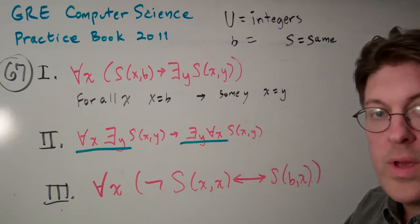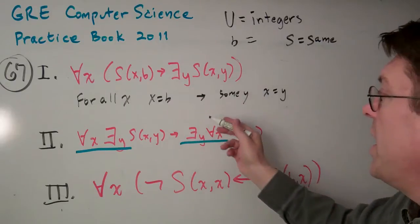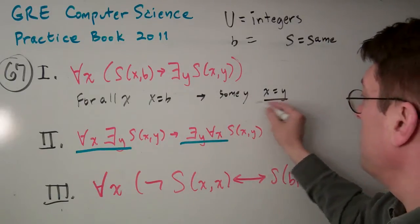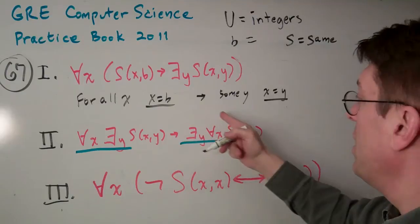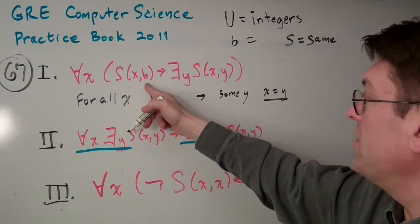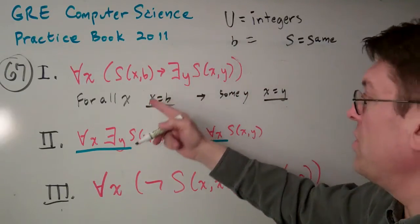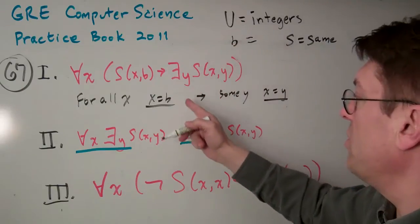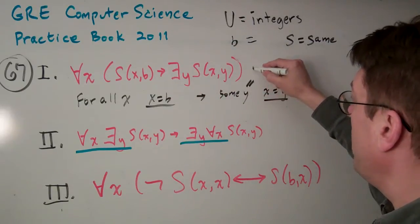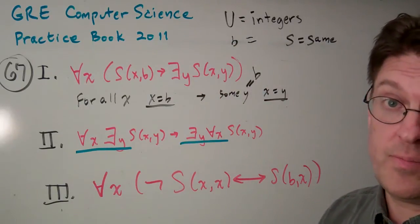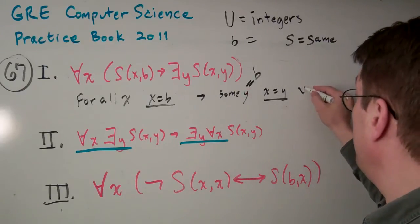Now, no matter how we interpret the function S, I mean, here I'm interpreting it to mean the same, but you really could interpret it any way you want. If B is an element of whatever the universe is and Y is an element of whatever the universe is, then some Y could always be B. And if that Y is B, then X equals B.